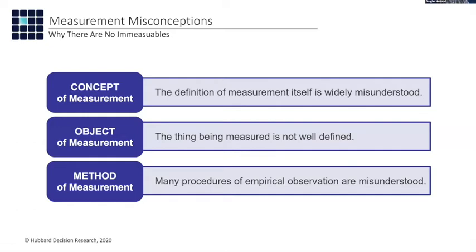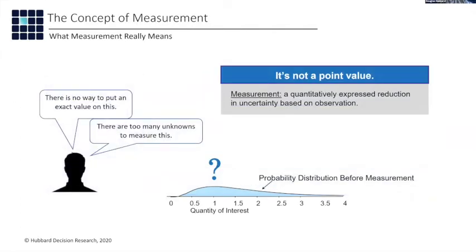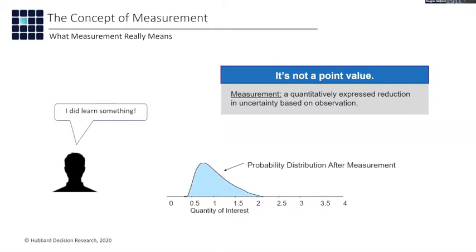So let's talk about each of these: concept, object, and method. First, for the better part of a century, measurement hasn't meant a point value in science — it hasn't meant an exact number in quite a while. The de facto use of the term in the empirical sciences and the most relevant use in practical decision making is: a quantitatively expressed reduction in uncertainty based on observation. You have to have an observation component and it has to be quantitatively expressed, but the elimination of uncertainty is not a requirement — just the reduction of uncertainty is sufficient.